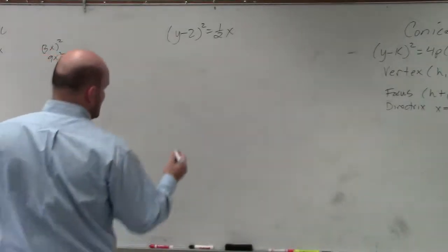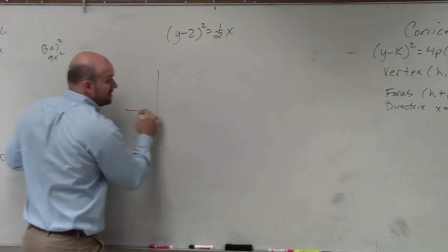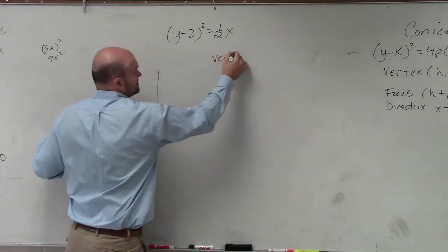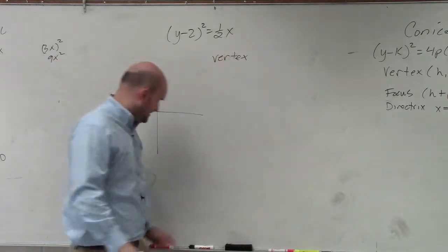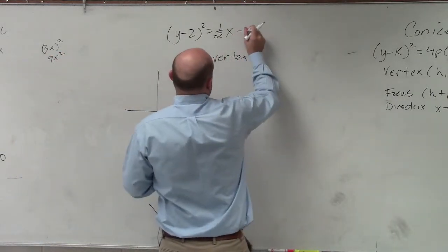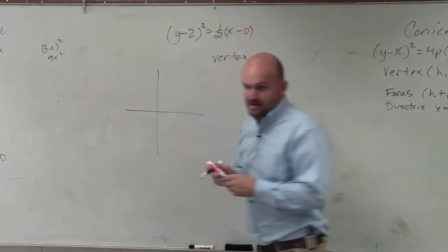So in this example, the first thing I want to do is identify the vertex. By looking at my formula, I know that my vertex is going to be (h,k). I don't have anything with this, right?